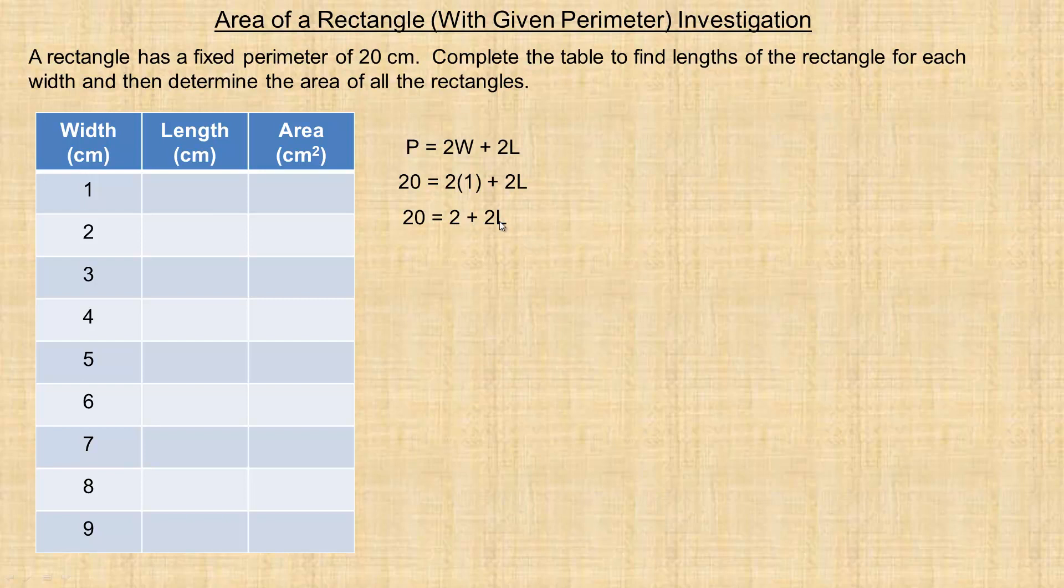I want to isolate L here, so I want to isolate the 2L term first. I want to get rid of this 2—it's added to the 2L, so I would subtract 2 from both sides to get rid of the 2 on the right. So 20 minus 2 is 18, 2 minus 2 is 0, so we just have the 2L term on the right. Then I want to isolate the L now. 2L—the 2 is multiplied by the L, so we divide both sides by 2. Those 2s divide out to give you 1L on the right, and so L is 9. We'll put a 9 here, so if the width is 1, the length of this rectangle would be 9.